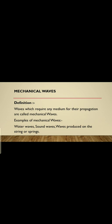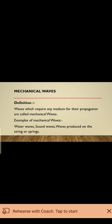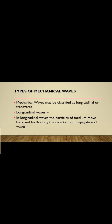Waves which require a medium for their propagation are known as mechanical waves. For example, water waves, sound waves, and waves produced on springs and strings. For any type of wave, a medium is required. For example, if we switch on a fan, sound waves are produced, and the medium for sound waves is air. For water waves, the medium is water.